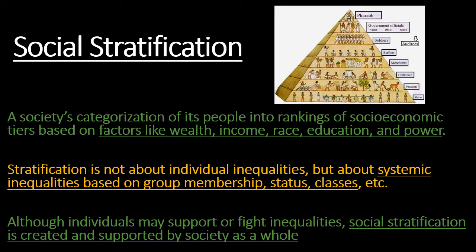On the first few slides we'll cover some definitions as a basis for the rest of the lecture. Social stratification is defined as a society's categorization of its people into rankings of socioeconomic tiers, based on factors like wealth, income, race, education, and power. Stratification is not only about individual inequalities but systemic inequalities based on group membership, associated status, and different classes, created and supported by society as a whole.